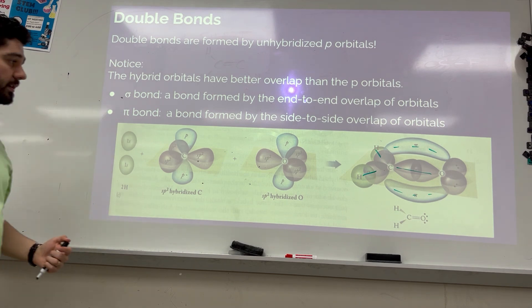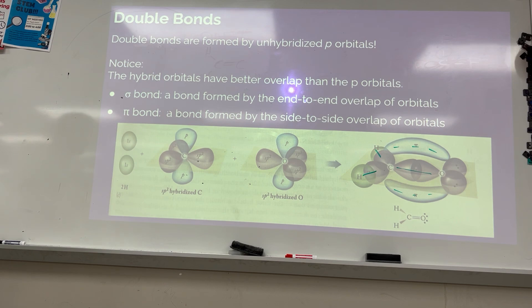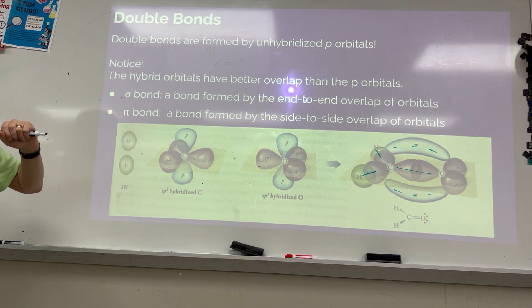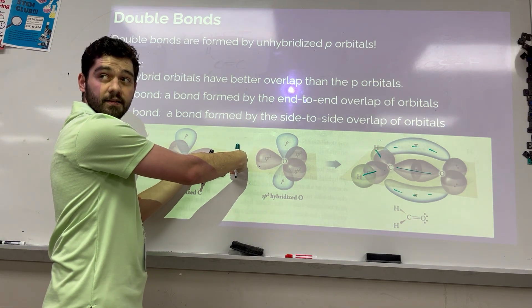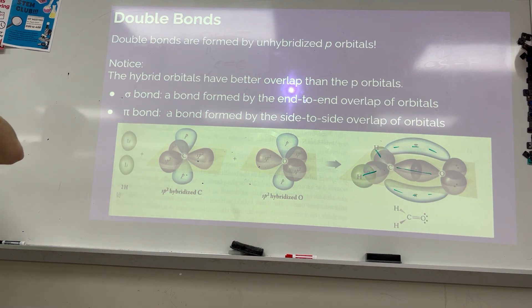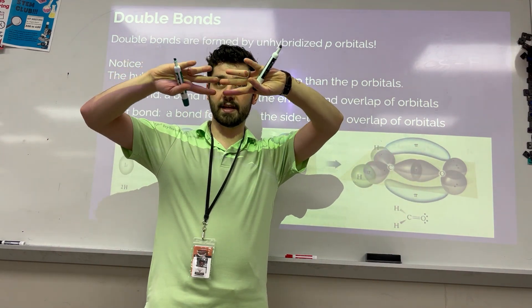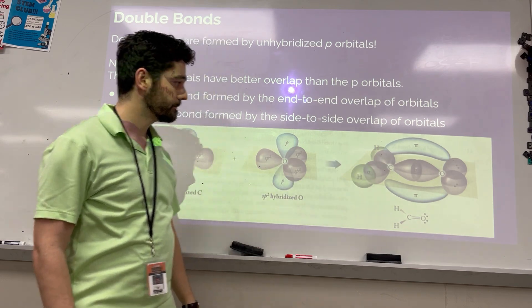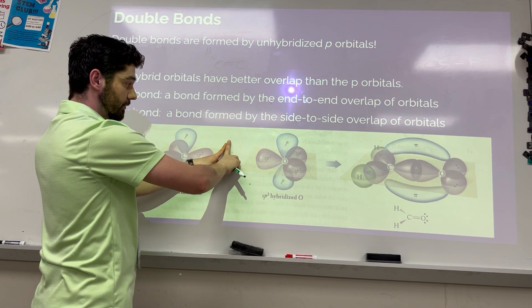Chemists differentiate these types of bonds because the overlap is different, and this leads to different names for bonds. If I have two orbitals that overlap head to head — end to end — that's called a sigma bond (lowercase sigma). Just two orbitals overlapping head to head. A sphere can only go head to head, so that's always a sigma bond. If I have p orbitals overlapping side to side, that is a different type of overlap called a pi bond.